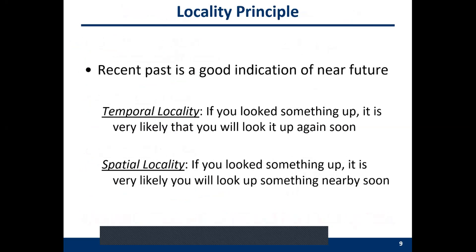There are two very important locality concepts in computer architecture. The first is temporal locality: if you use something now, it's very likely you will use it again very soon. The second is spatial locality: if you access something now, it's very likely you will access something nearby soon — for example, if you need variable at address A, you will likely need address A+1 or A-1 very soon.